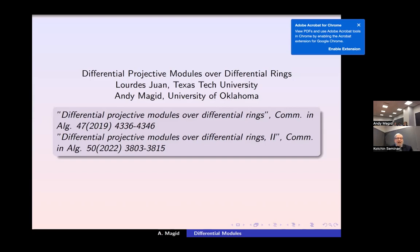That was an answer, but it's not very satisfying because it's not easy to figure out what those are. So instead we just decided to ask ourselves: what about just differential modules over commutative rings? Since we were coming from the hope of finding a K-theory, we wanted to use differential projective modules. So that's my preliminary remarks, and now I'll begin using my slides.